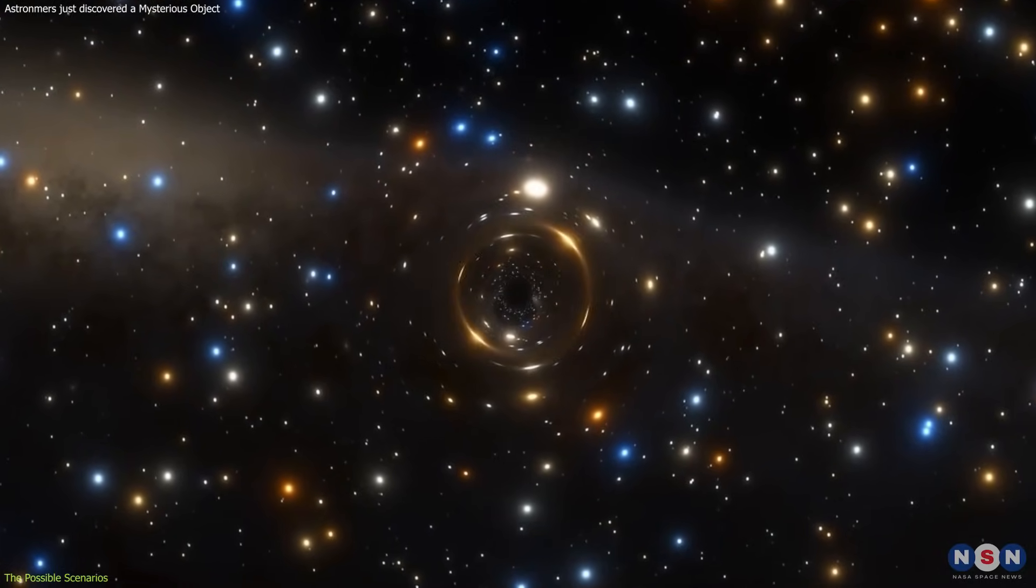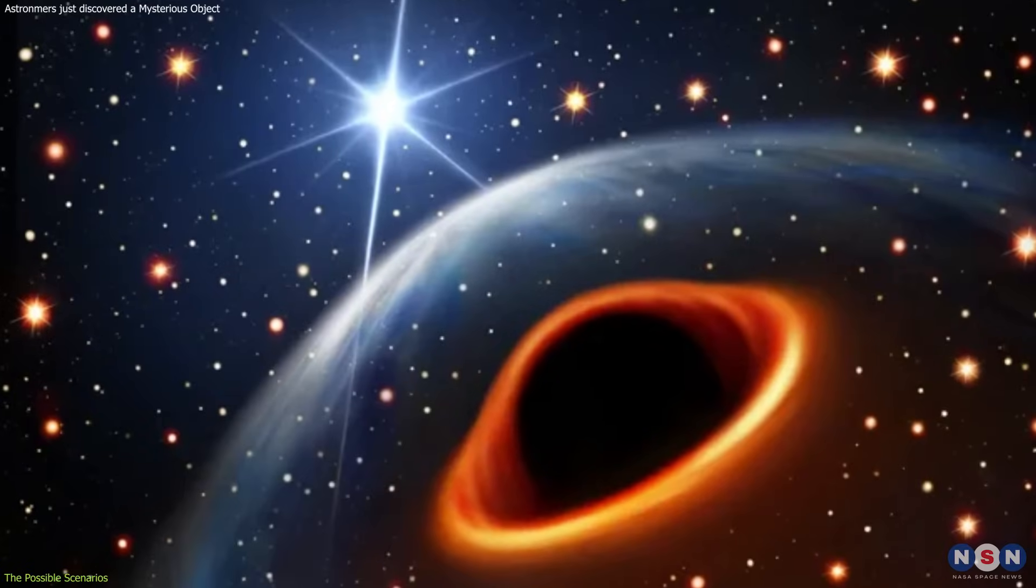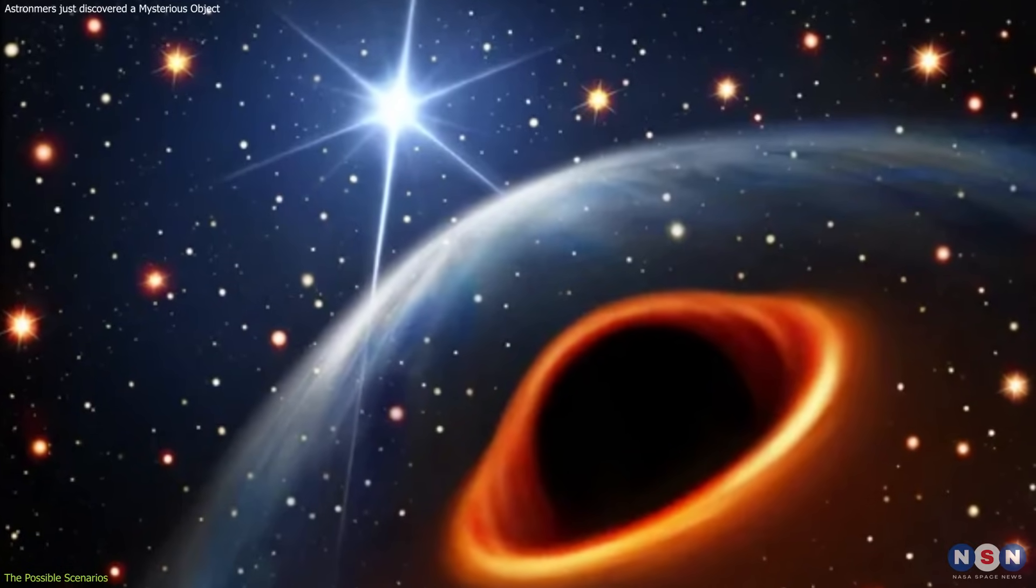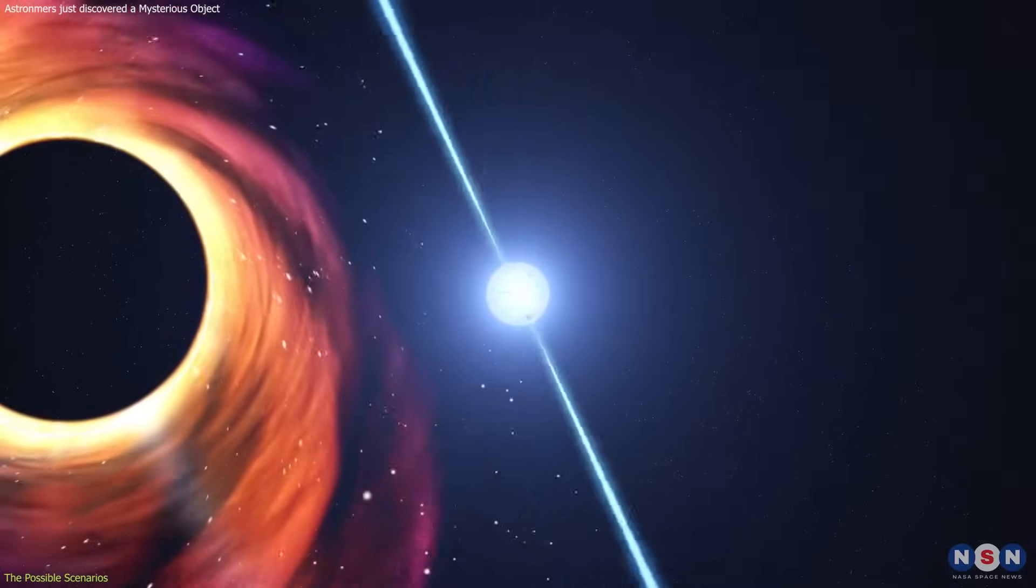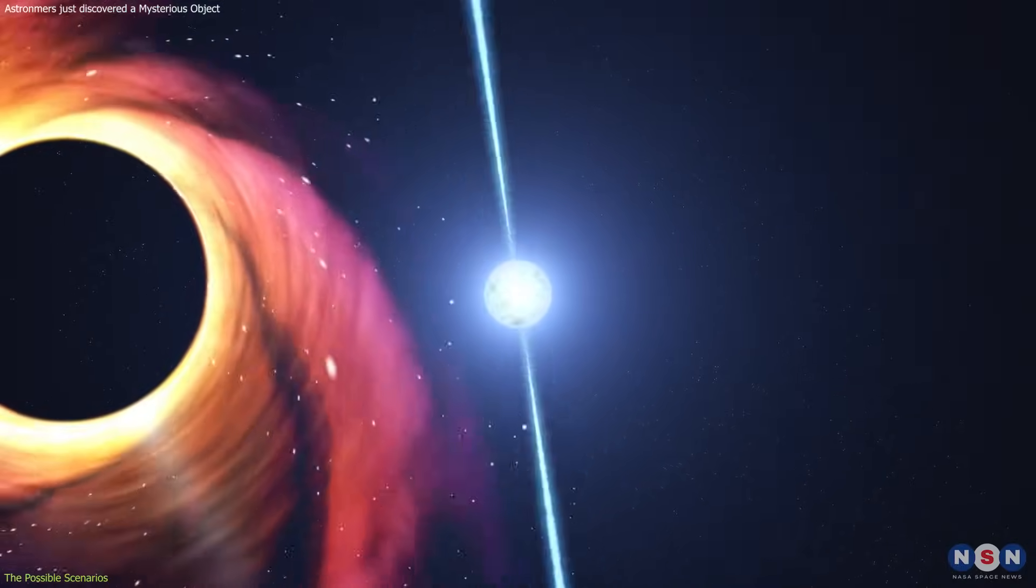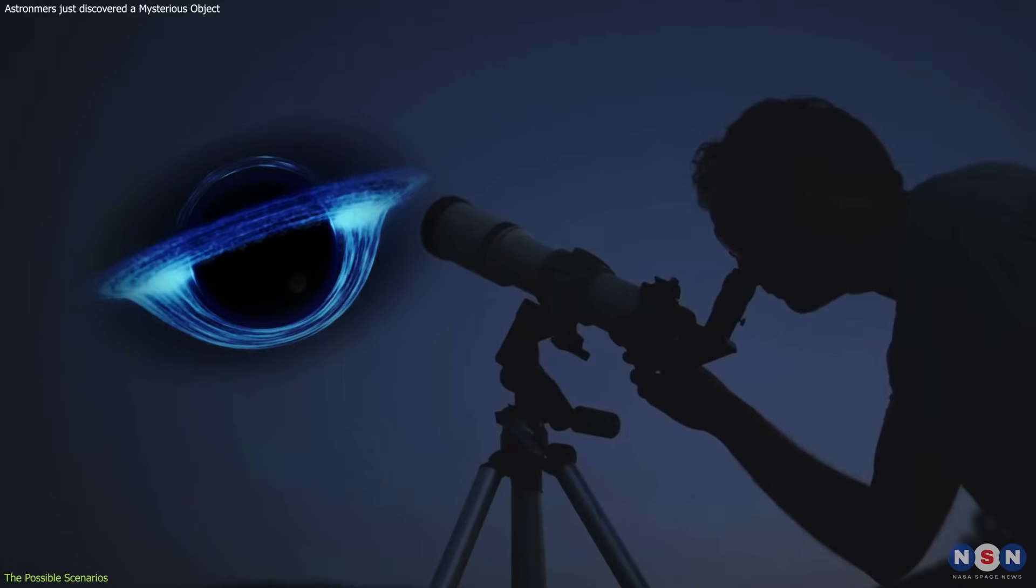This makes a black hole very hard to observe directly, and we can only infer its existence from its effects on the surrounding matter and light. However, there are some challenges and uncertainties in identifying the mystery object as either a neutron star or a black hole. One of them is the lack of direct observations.